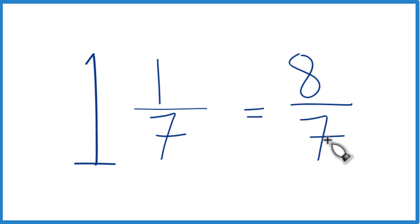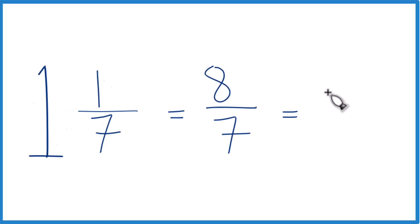And we can even check our work, because 7 goes into 8 just one time. 1 times 7 is 7, with 1 left over. Bring this denominator across here, 1 and 1 7th.